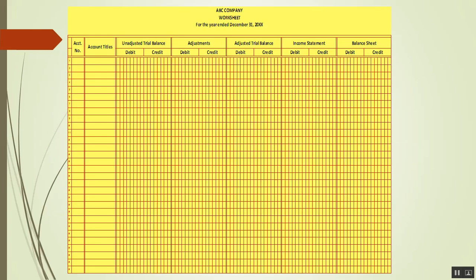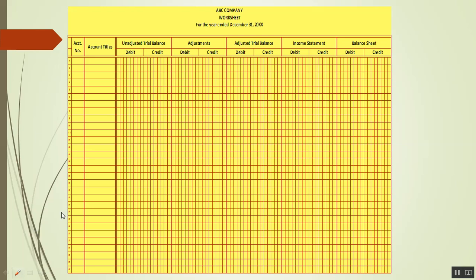This is an example of a 10-column worksheet. As you can notice, here we list — using a highlighter — the company name or the heading, which includes the company name, the title 'Worksheet', and for the year ended December 31, you place the date there.